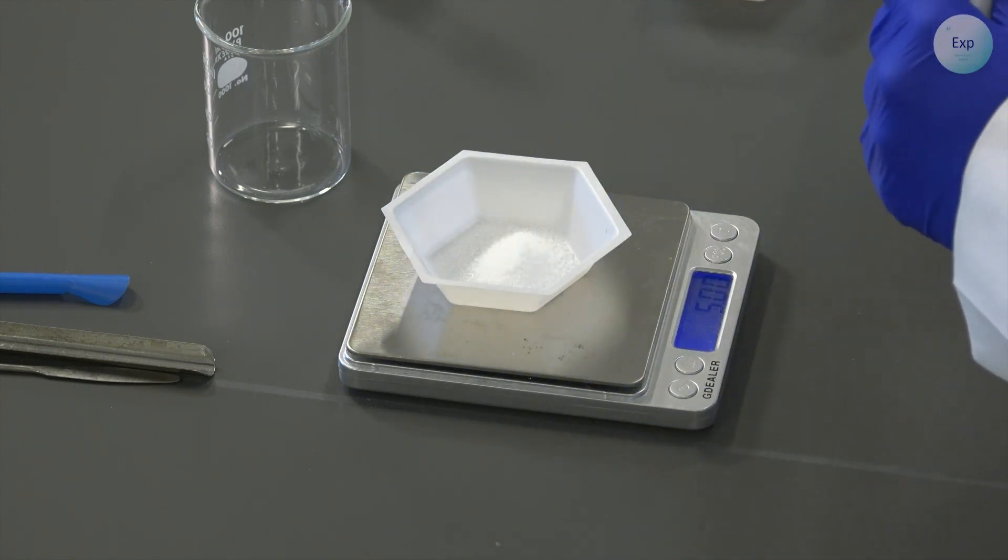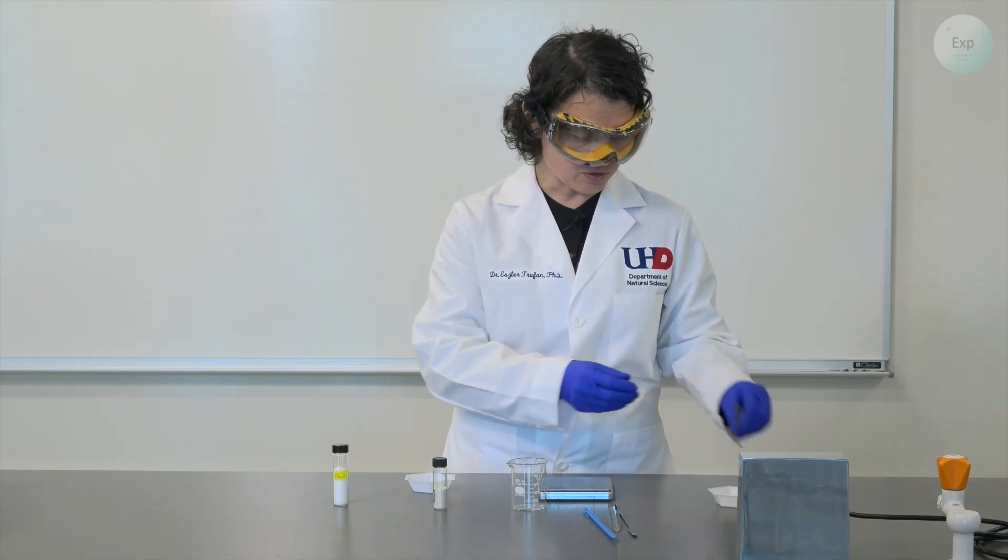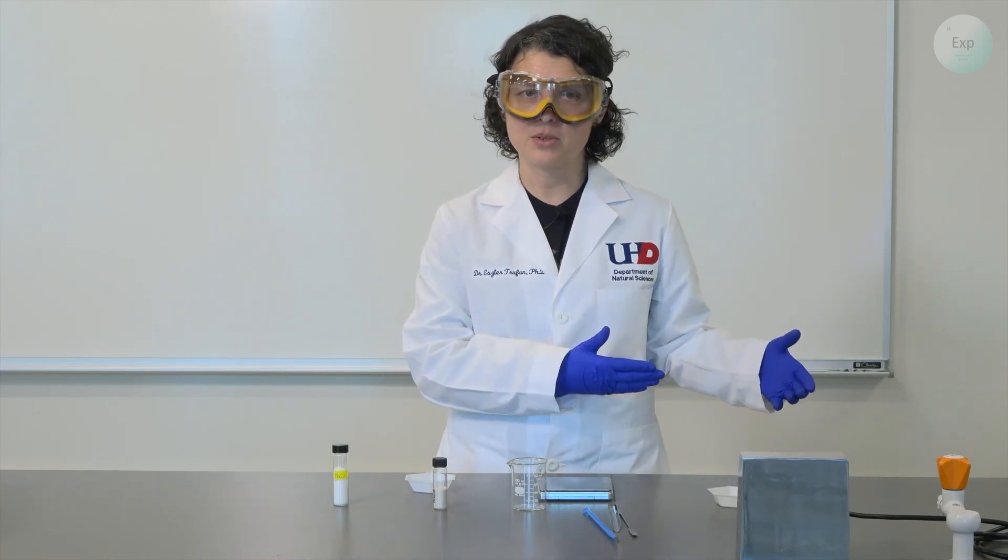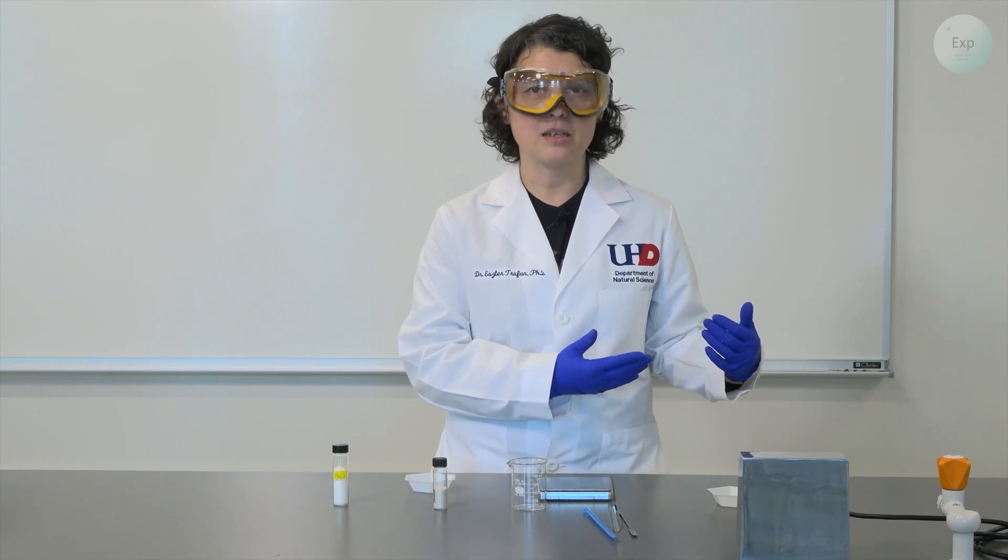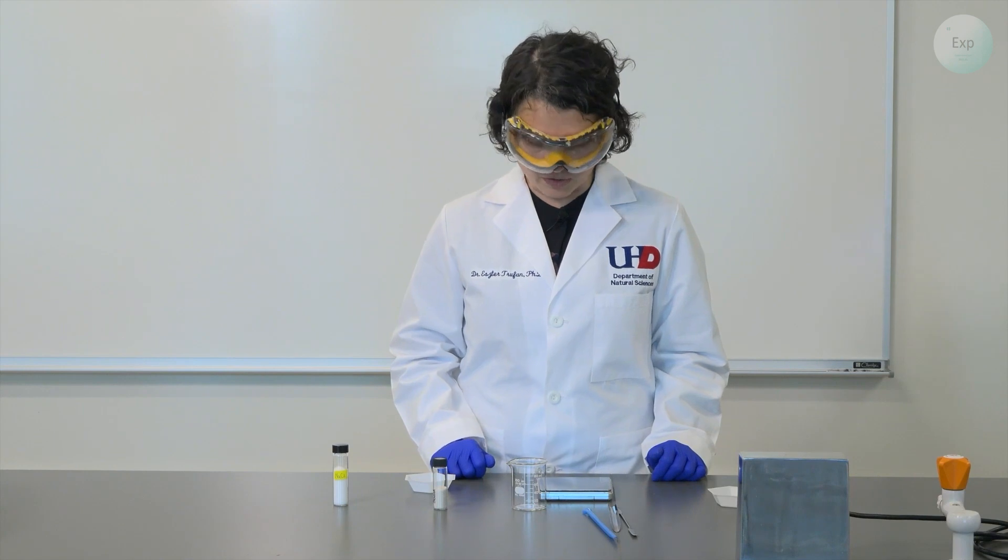I have 5.00 grams of sodium chloride in my weighing boat. I will set this aside and also set my spatula aside because I contaminated it with sodium chloride. So at this point, I can either wash it and dry it, or switch to a clean spatula or scoopula.